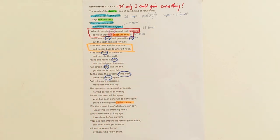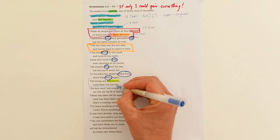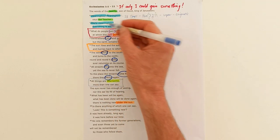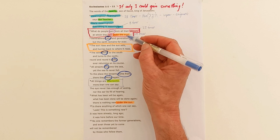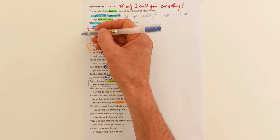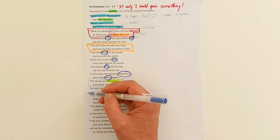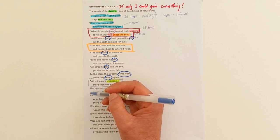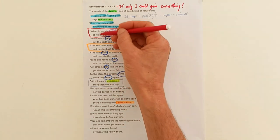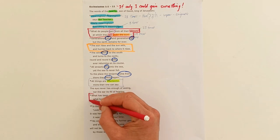As he observes this ebb and flow, what that leaves him feeling is weary. Verse 8 here is the heart of this poem. The question that he's trying to deal with is what do people gain? The ebb and flow of the world we live in makes him feel like we gain nothing.